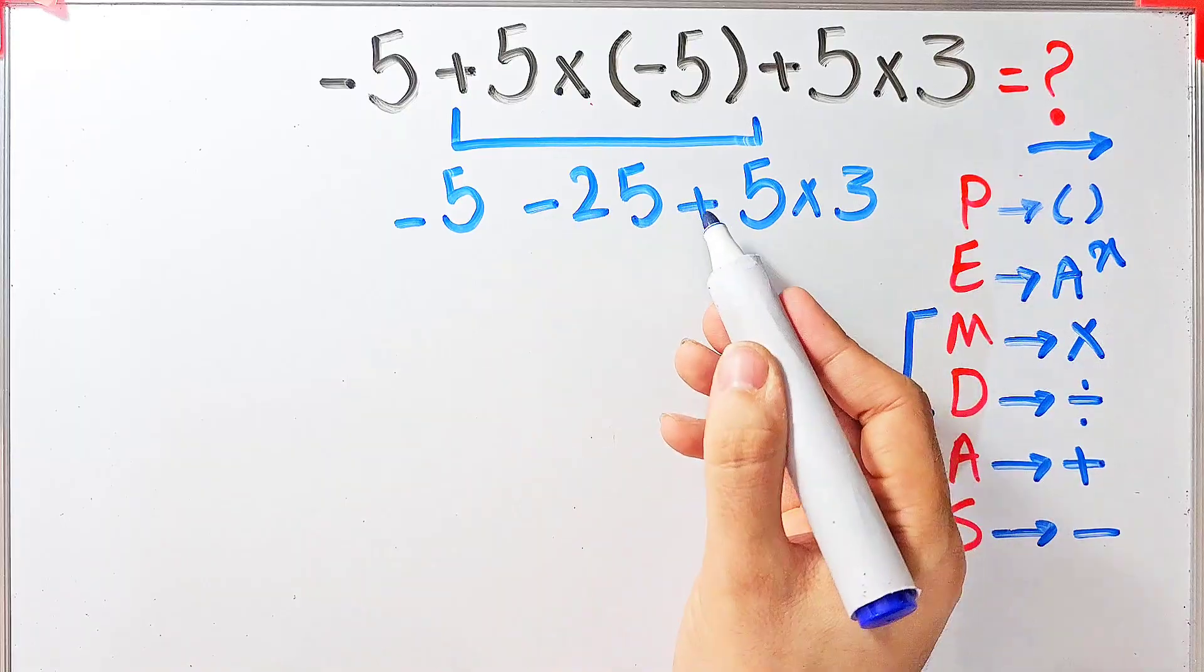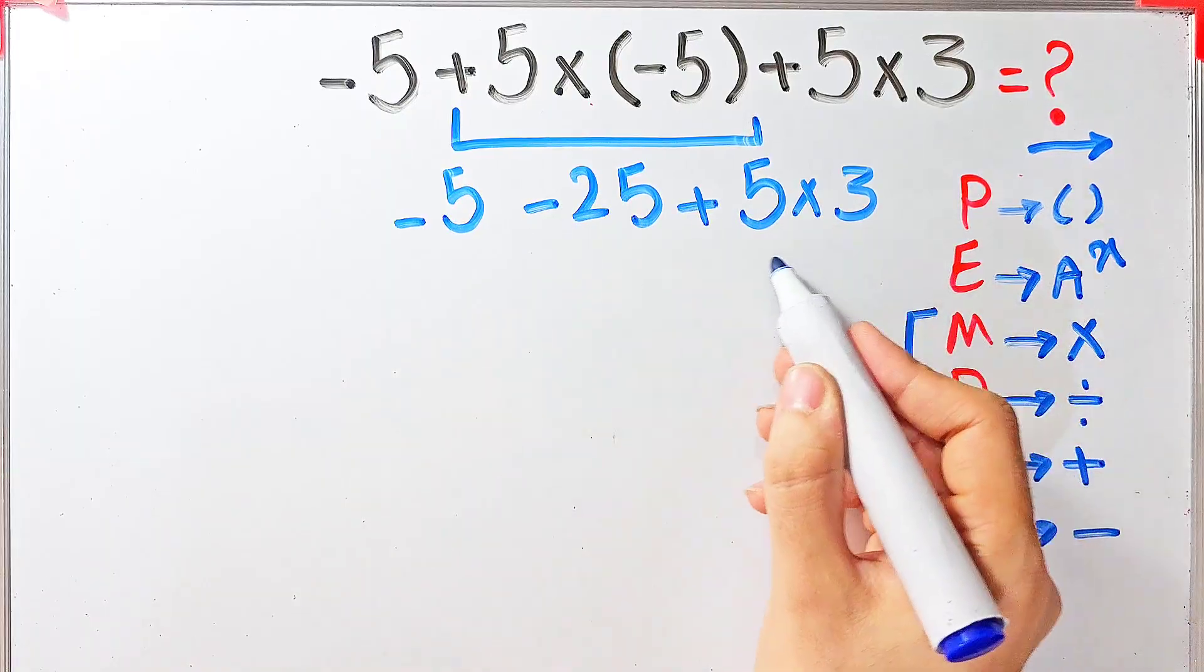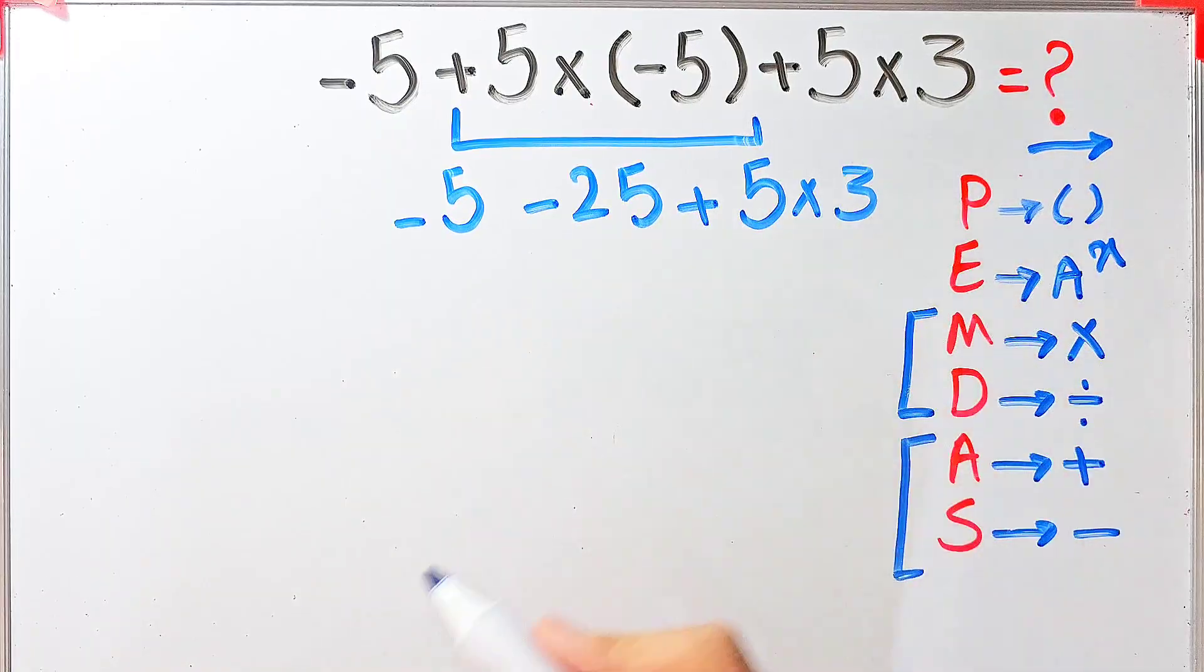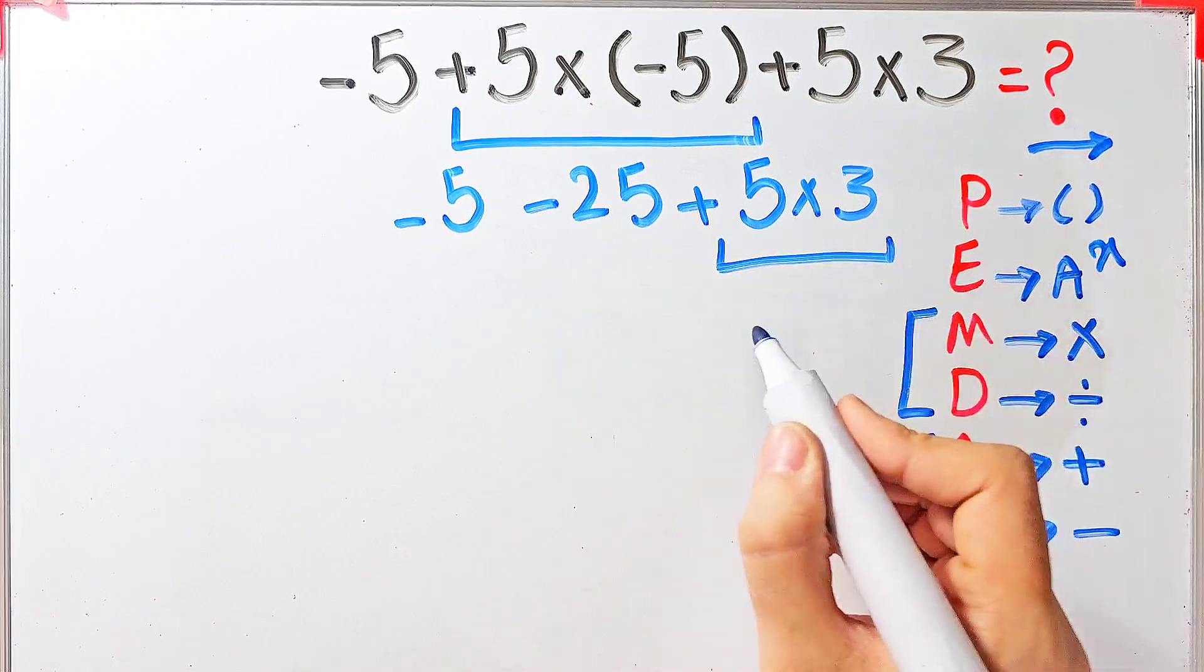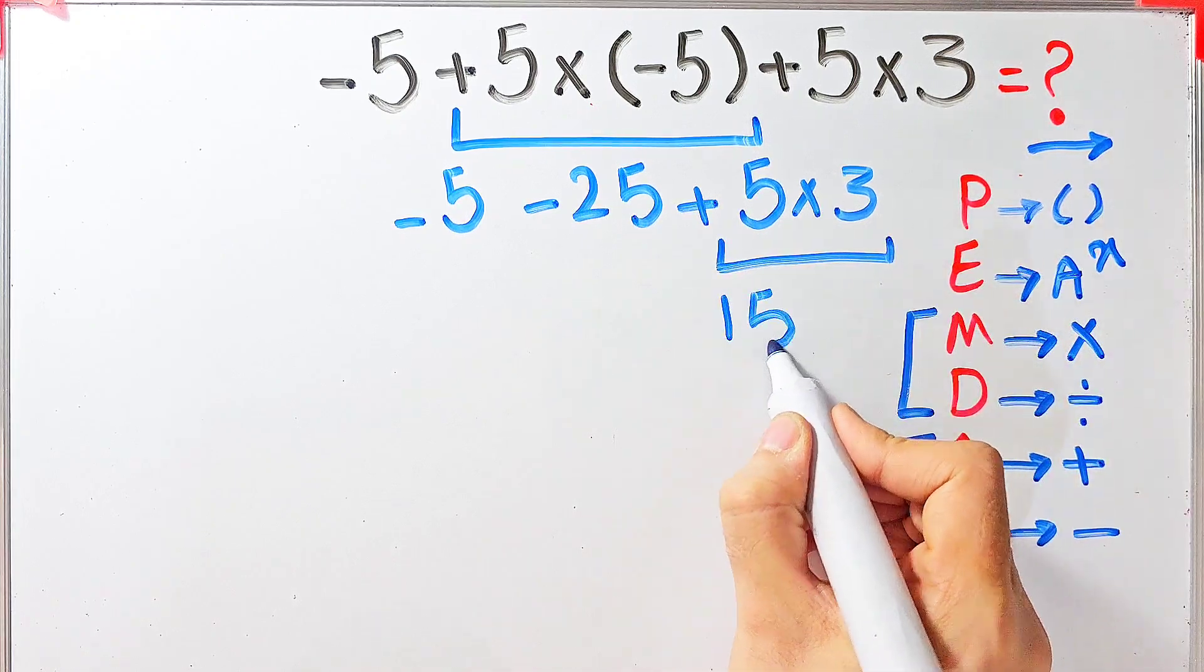Now we have subtraction, addition, addition, addition, and multiplication. First we simplify this multiplication: 5 times 3 equals 15. Now the question is negative 5 minus 25 then plus 15.